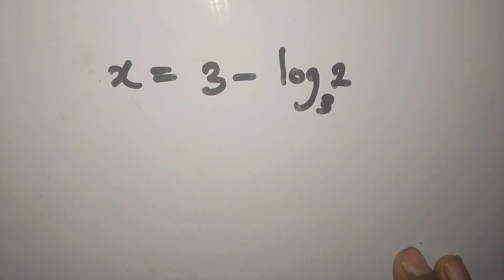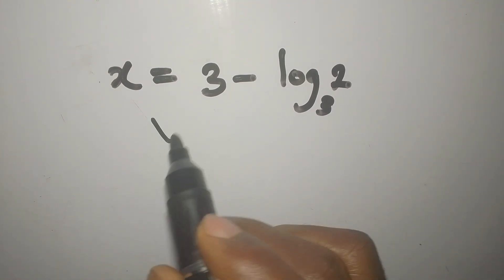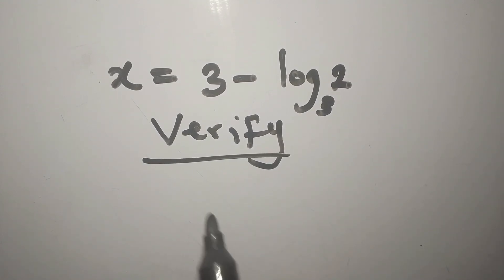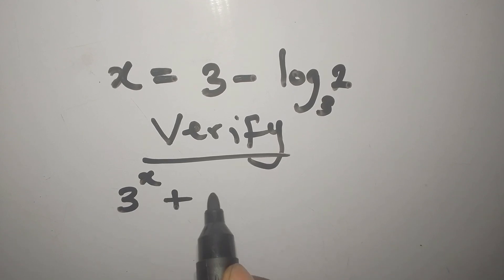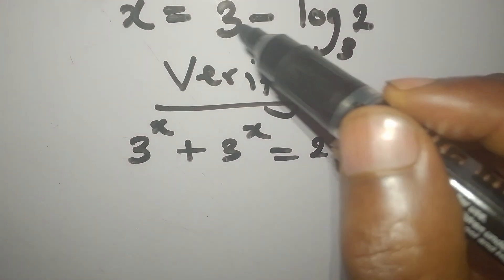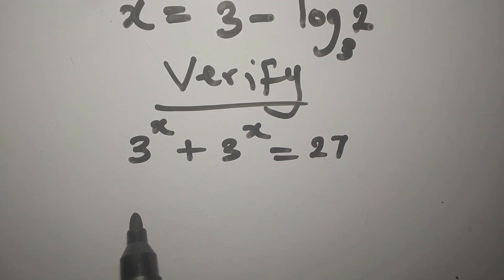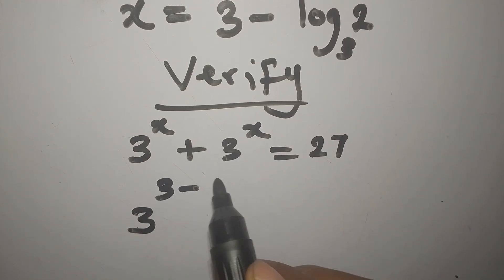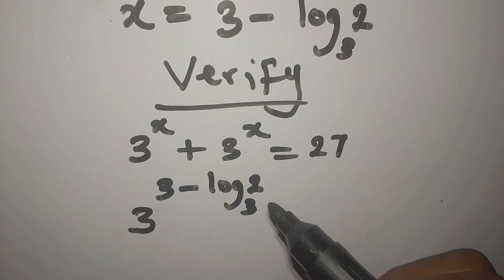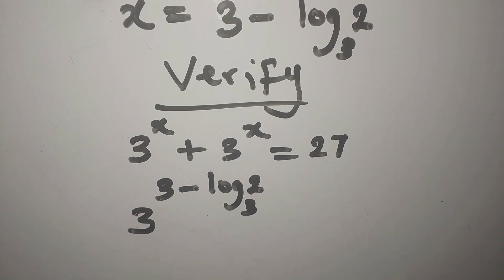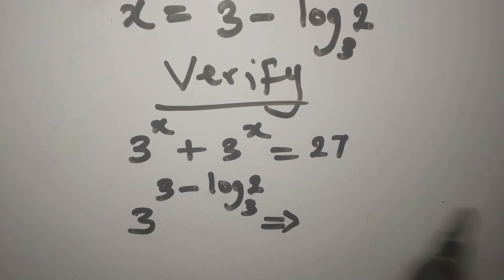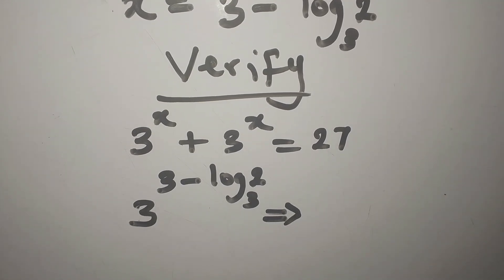We always verify our result. The original equation is 3^x + 3^x = 27, and our x is 3 minus log₃2. So we write 3 to the power of (3 minus log₃2). We will have this in two places since the equation has two such terms, so let me simplify this expression first and then add it by itself.